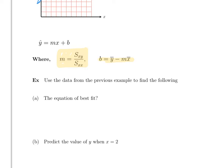Using the data from the previous example, m = S_xy / S_xx = −10.6 / 12.8 ≈ −0.83.